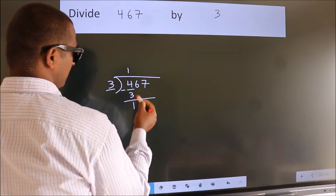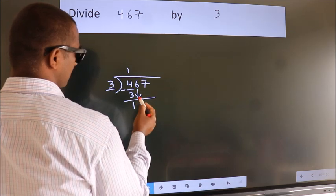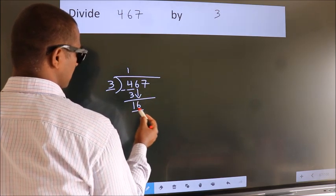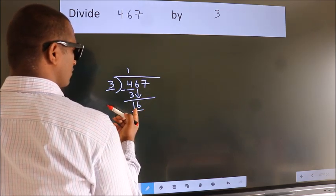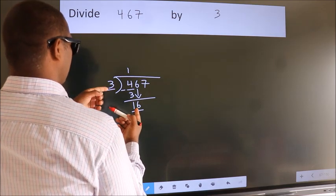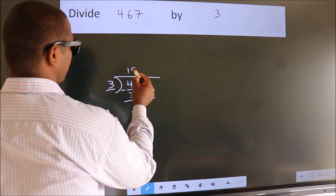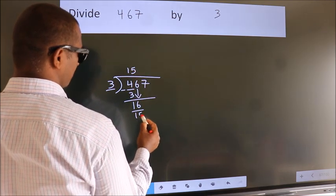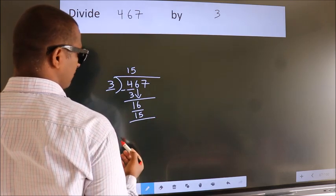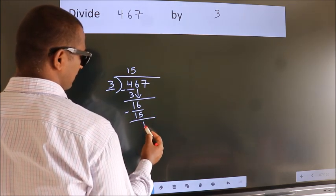After this, bring down the next number. So, 6 down. So, 16. A number close to 16 in 3 table is 3 fives 15. Now, we subtract. We get 1.